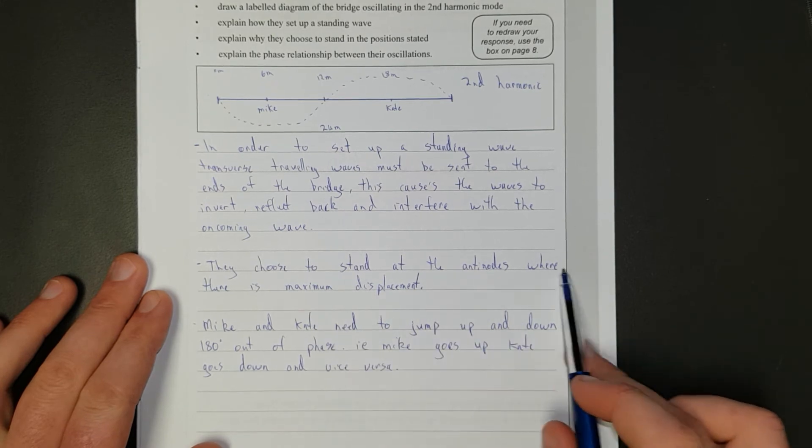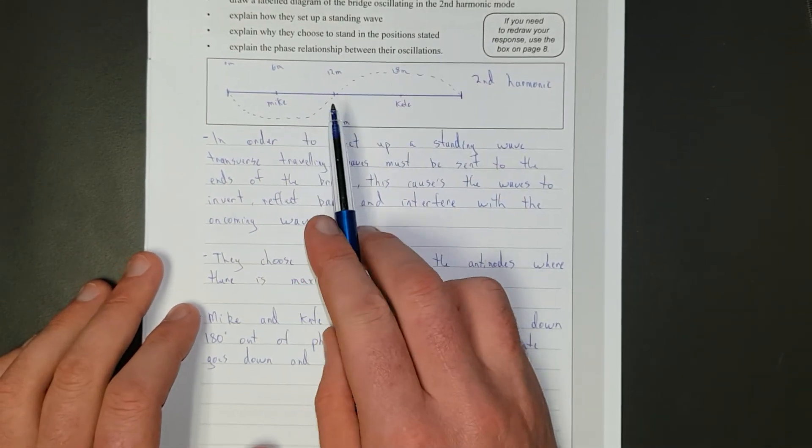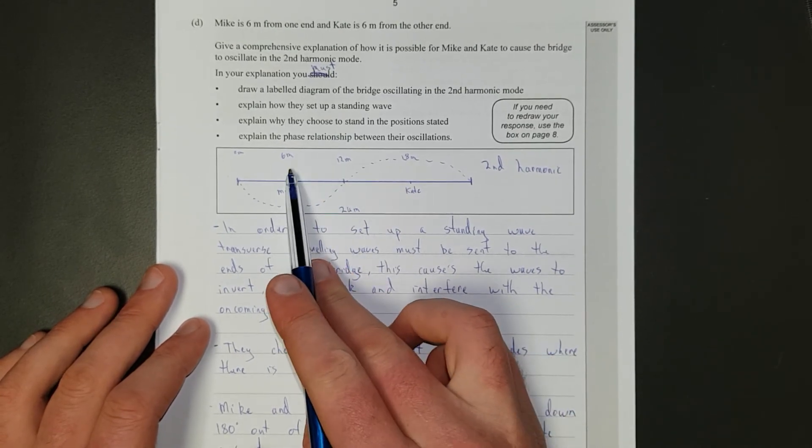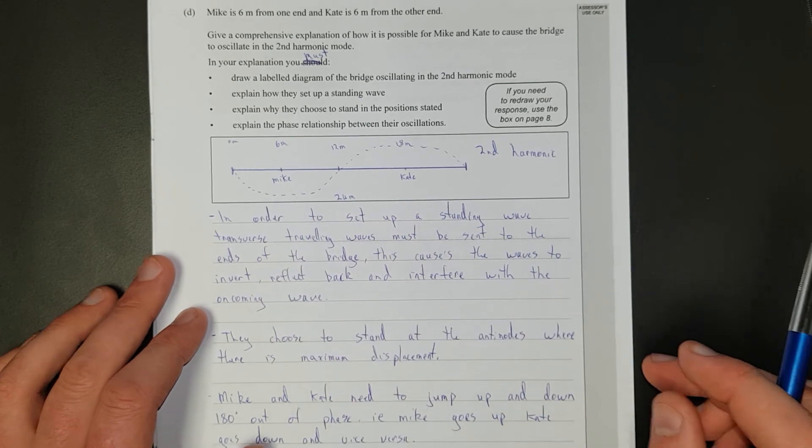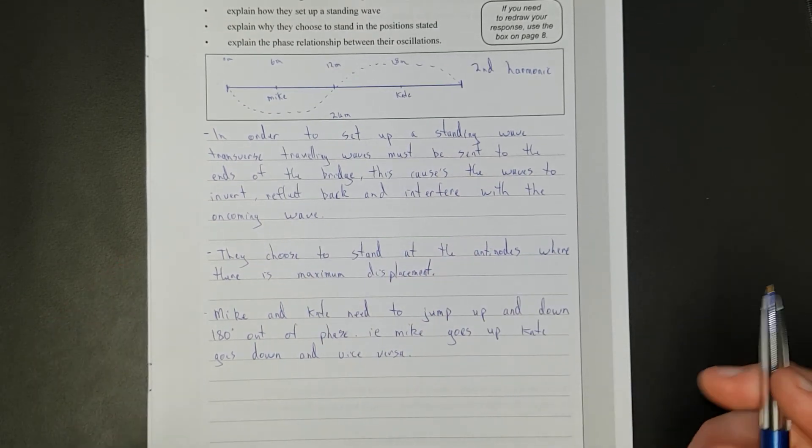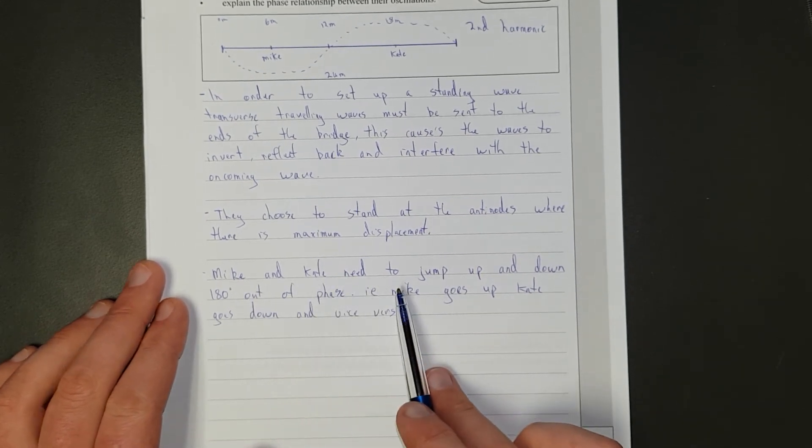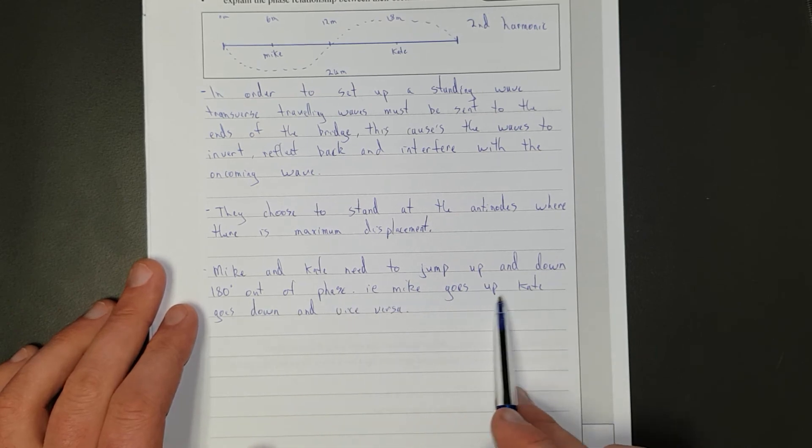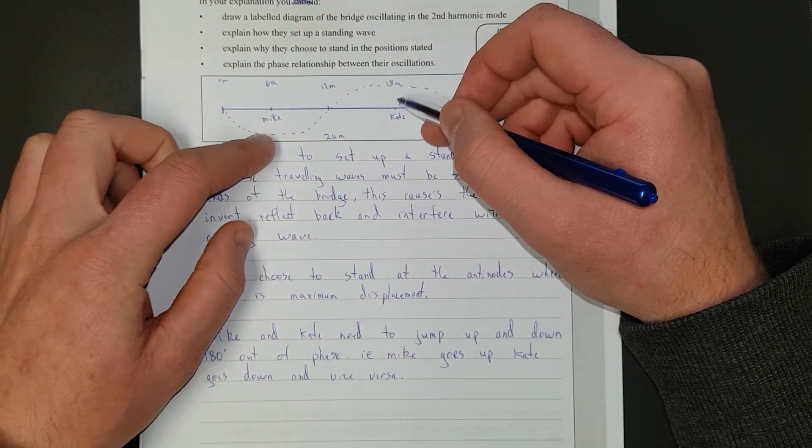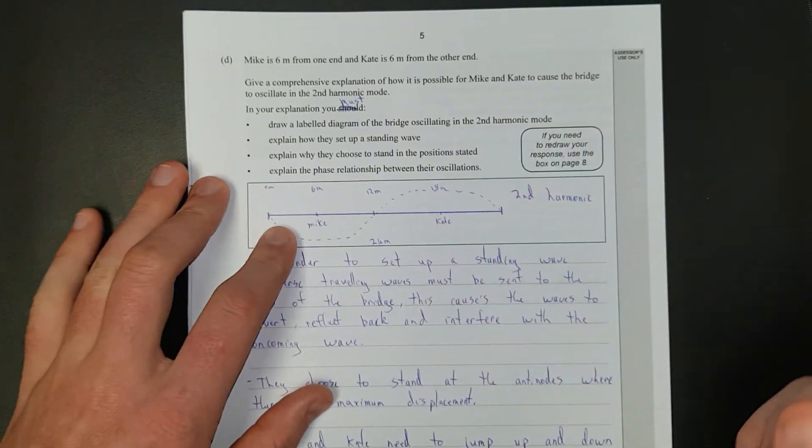They choose to stand at the anti-nodes where there is maximum displacement. That's why they choose the position stated. In reality, if you're actually doing this, if you've ever done this before, normally what you do is you stick one foot on the node and the other foot on the anti-node. But let's assume this bridge can't really go up and down very much. Mike and Kate need to jump up and down 180 degrees out of phase. I.e. Mike goes up, Kate goes down, and vice versa. When Mike's pushing down, Kate needs to be jumping up. And when Mike is jumping up, Kate needs to be pushing down, and so on and so forth.